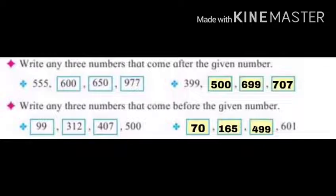Then 399, again the answers are 500, 699, 707. Here also, you can write 400, 401, 402. No problem at all. But only the answer should be after the given number.